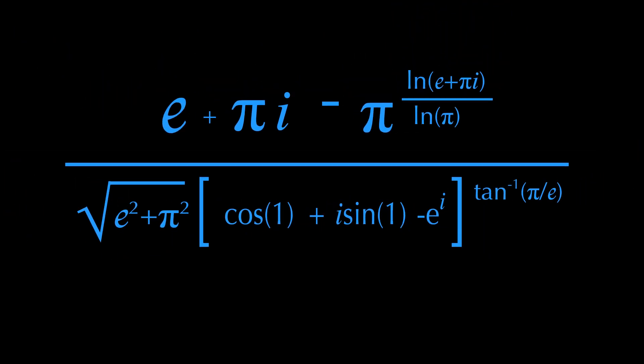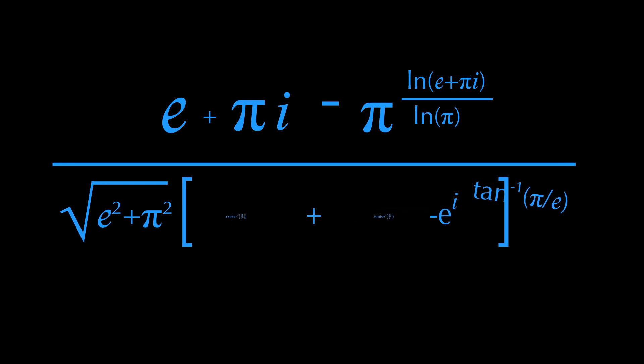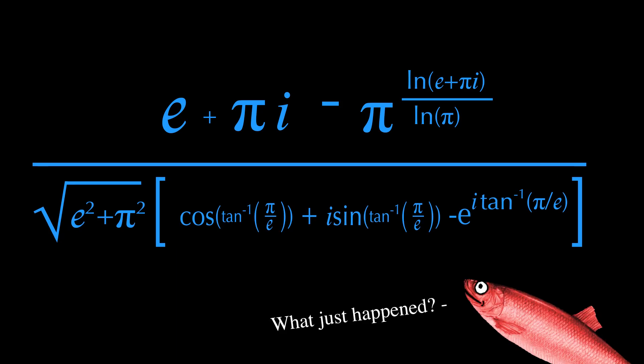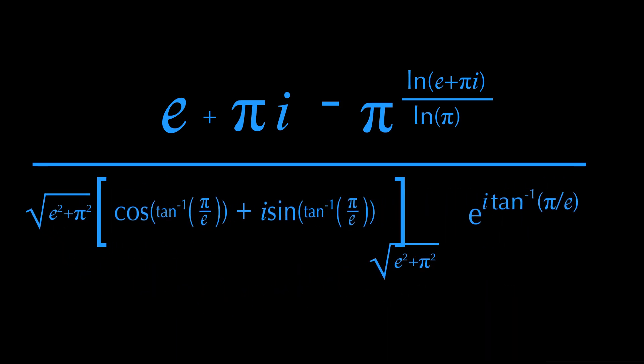A really cool maneuver can be done using the Moivre's technique. This exponent can be distributed like so. And we can see that we just had two identical complex numbers all along.